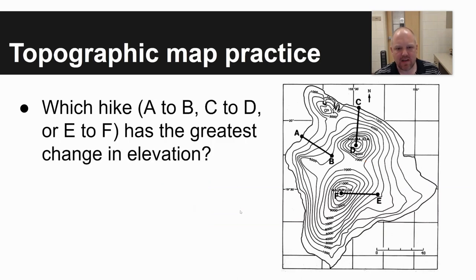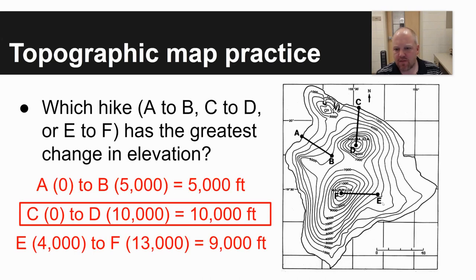It says which hike, A to B, C to D, or E to F, has the greatest change of elevation. You can see the different dots are labeled here, A to B, C to D, or E to F. The way that you'd figure this out is figure out where you're starting in elevation and where you're ending in elevation.